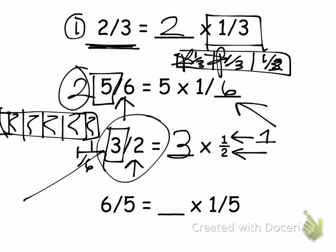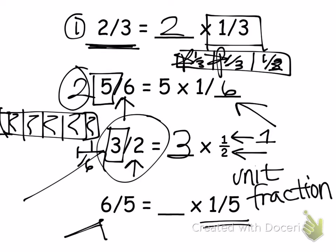Try 6 fifths equals blank times 1 fifth. What would you have to multiply times 1 fifth, which is my unit fraction, to find 6 fifths? Again, you look to my numerator. I would multiply 1 fifth times 6 to give me 6 fifths.